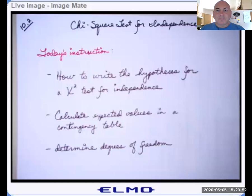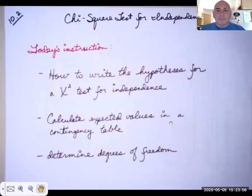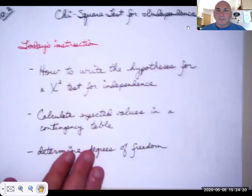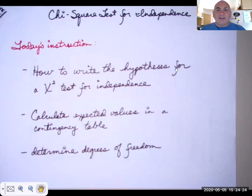Let me share my screen and we'll get started. For a test for independence, we need to learn how to write the hypotheses. As we learned in the goodness of fit test, we don't use equations anymore — we use a sentence. We're also going to learn how to calculate expected values. In the goodness of fit test, we just multiplied our observed values by the percentages in the given distribution. It's going to be a little different today. We'll also learn how to calculate degrees of freedom, which will be a little different from the goodness of fit test as well.